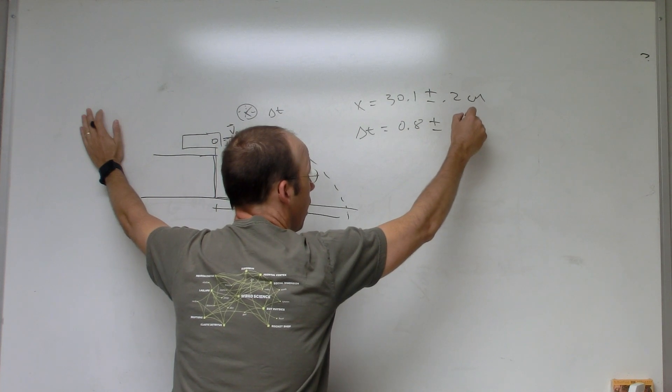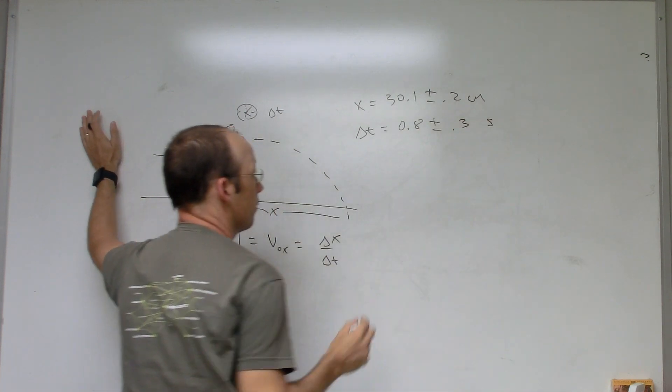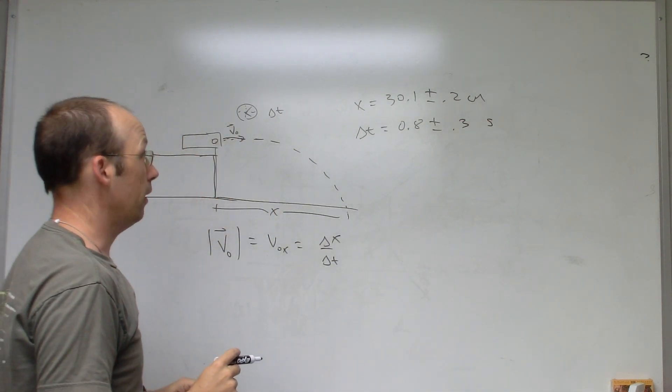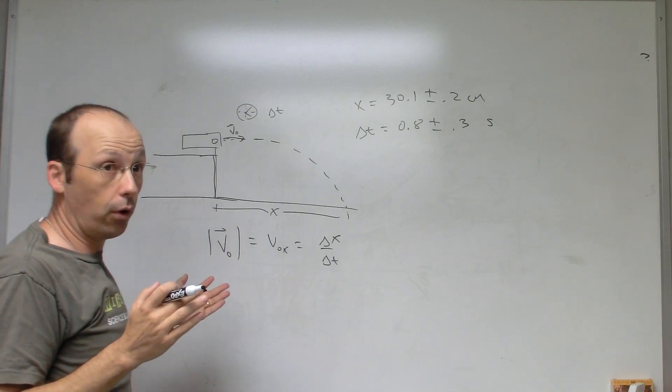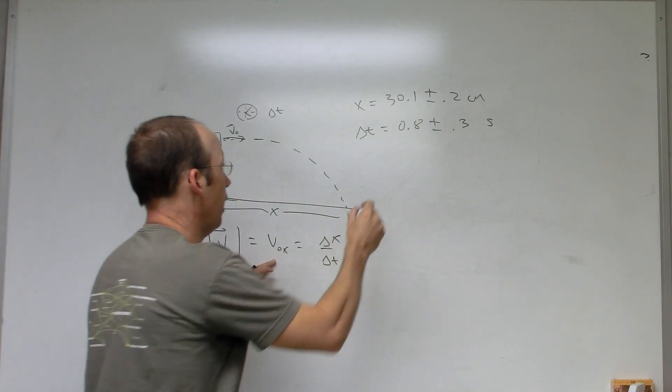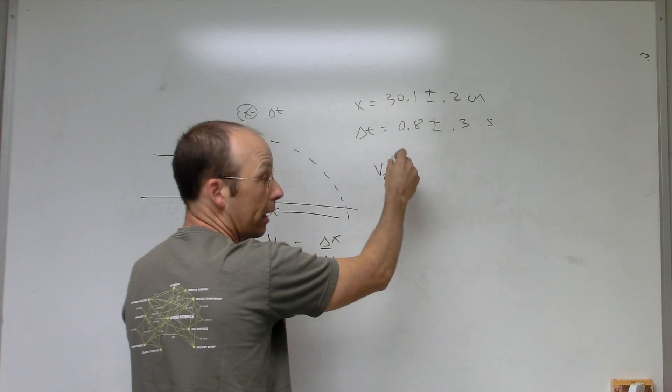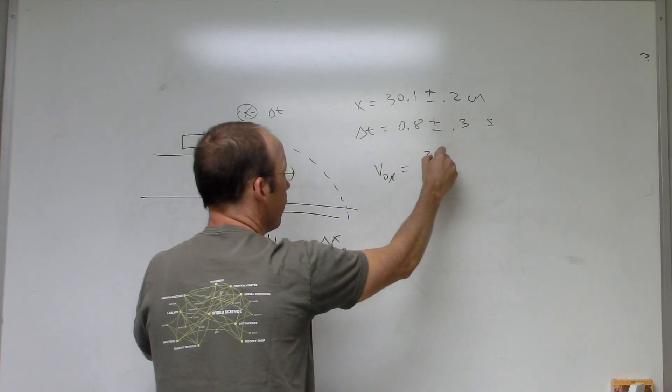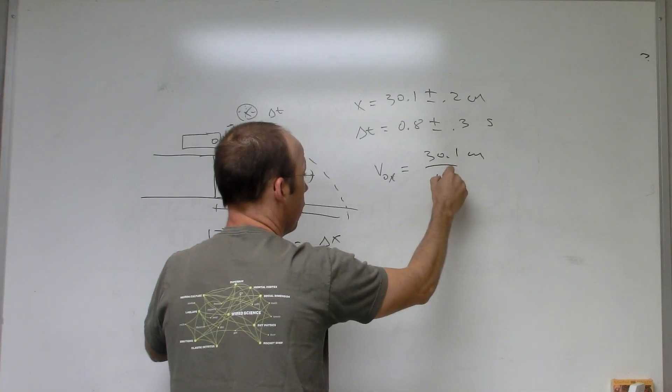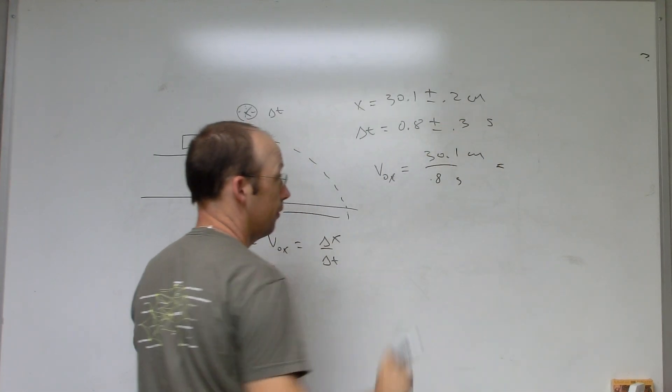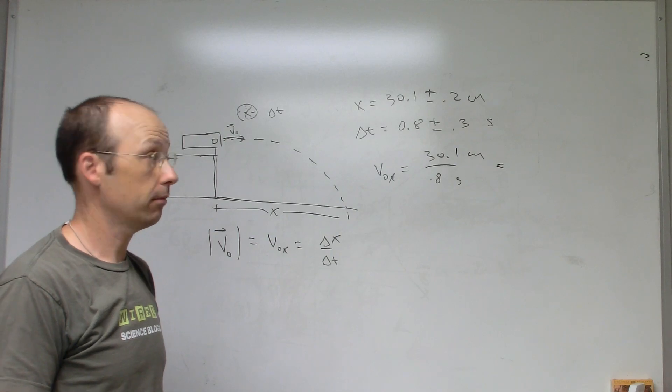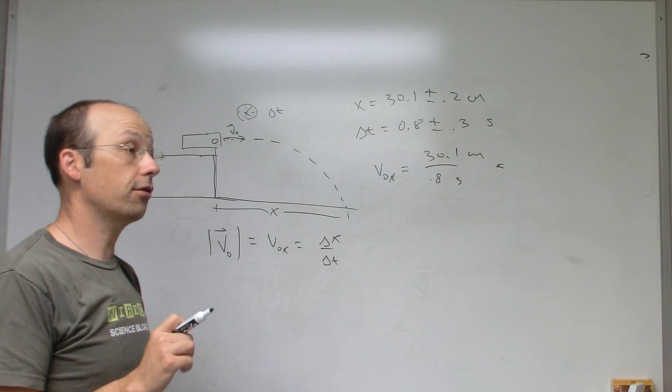So this is pretty straightforward. Then I can calculate v0x. I'm not going to do the numbers, I'll put them in there but I won't calculate it. It's going to be the average X, 30.1 centimeters, divided by 0.8 seconds, and that's centimeters per second, done.